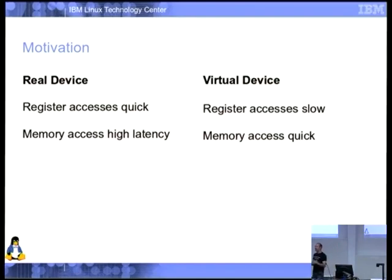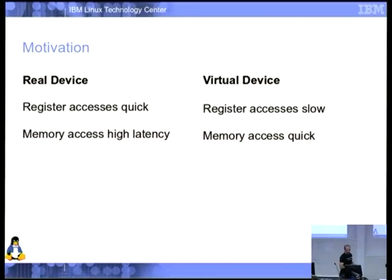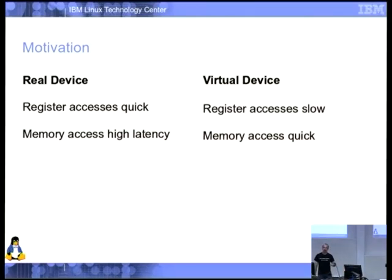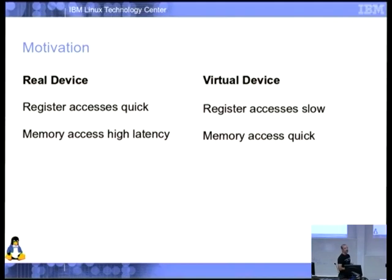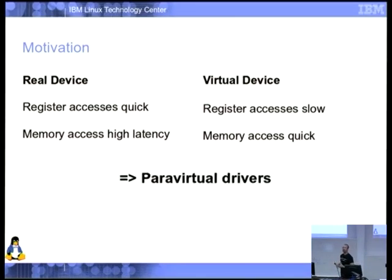When you're inside a guest in a virtualized system, the host emulating your device — those accesses when you hit a register tend to be fairly slow, and in many cases they'll cause an exit: the whole guest packs up, the host runs for a while, and the guest comes back — so that becomes quite expensive. But memory accesses can happen as fast as you can do them, so there's no latency involved. These different trade-offs eventually lead everyone to implementing para-virtual drivers or para-virtual devices.